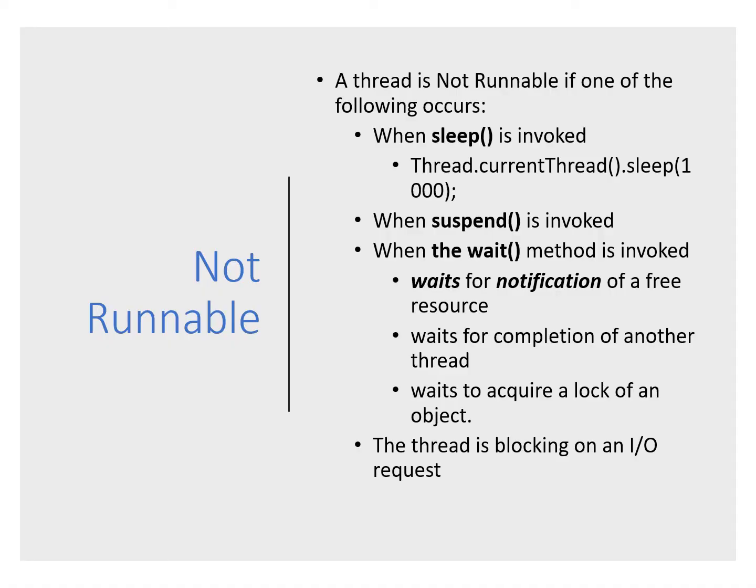A thread is not runnable if one of the following occurs: if we invoke sleep, the thread enters the blocked state until the sleep timer expires. A thread can also suspend itself by calling wait — we'll see what wait does in the next module. Waits can be woken up by notifications, so these are a pair of operations that cause a block and release. A thread is also not runnable if it does blocking IO — file IO or network IO typically cause a thread to wait until the IO completes.